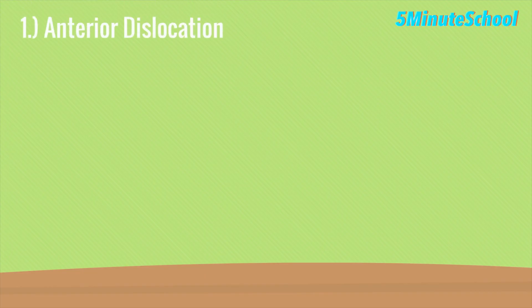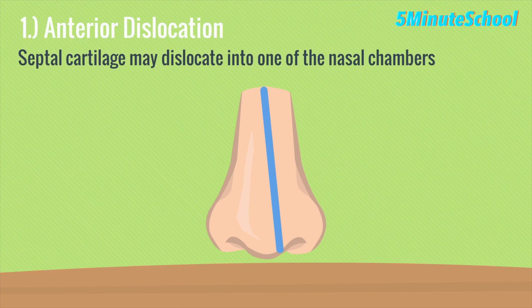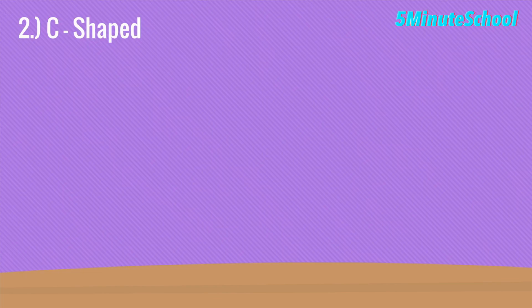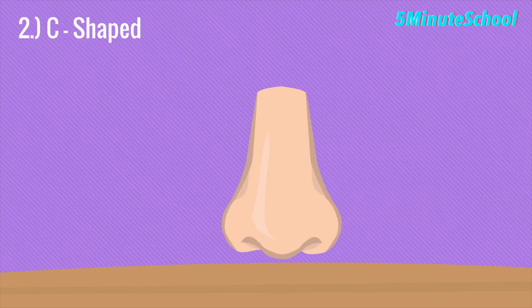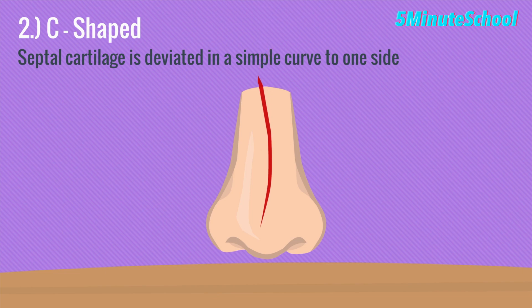There are a few different types of deviated nasal septum. The first is anterior dislocation, where the septal cartilage is dislocated into one of the nasal chambers. The second is the C-shaped deviation, where the septum curves in a simple curve to one side.